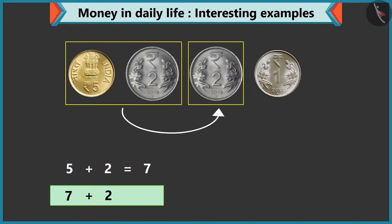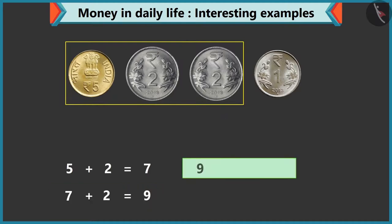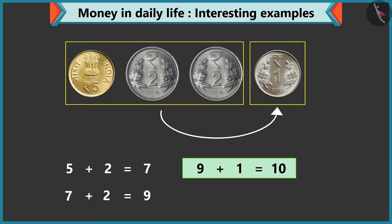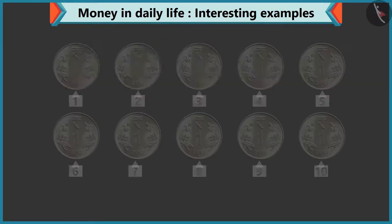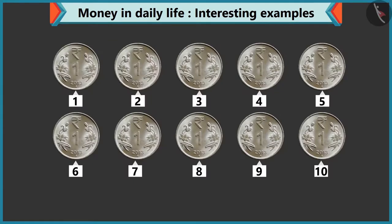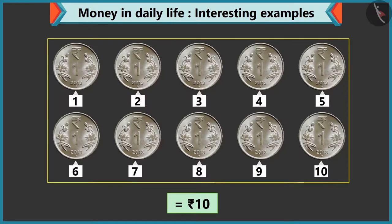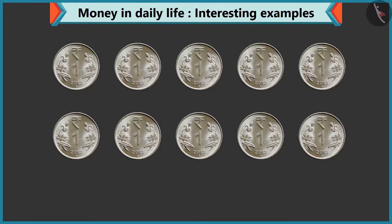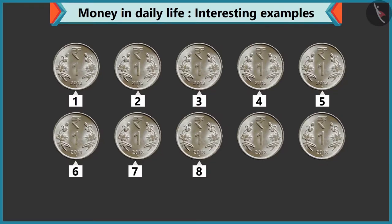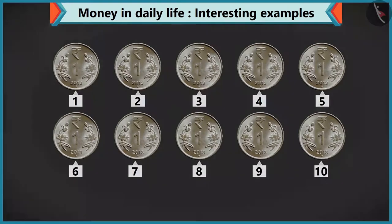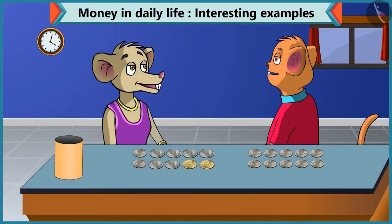And 9 by adding 1 to it makes 10. Even if you add 10 coins of 1 rupee, that will make 10 rupees too — counting: 1, 2, 3, 4, 5, 6, 7, 8, 9 and 10. So Chi Chi, you can make 10 rupees by adding different coins.